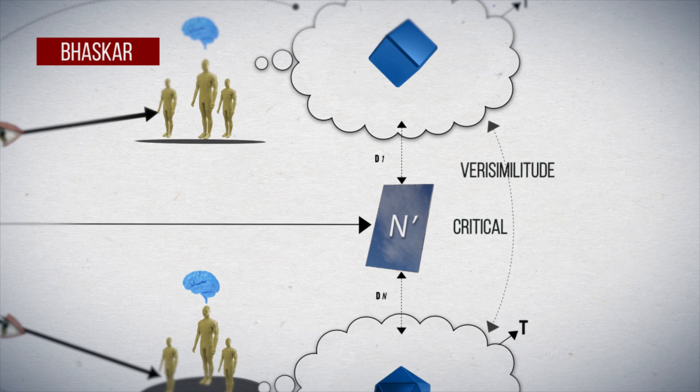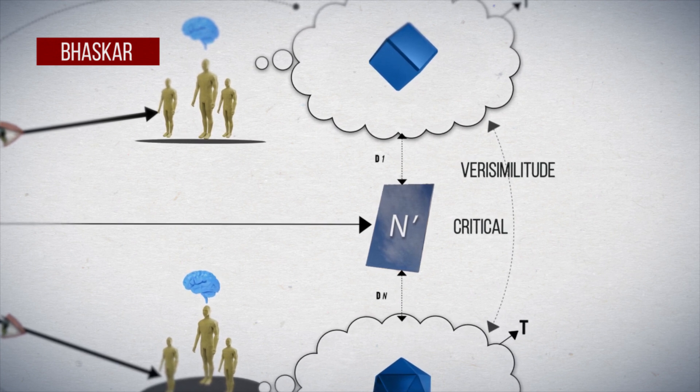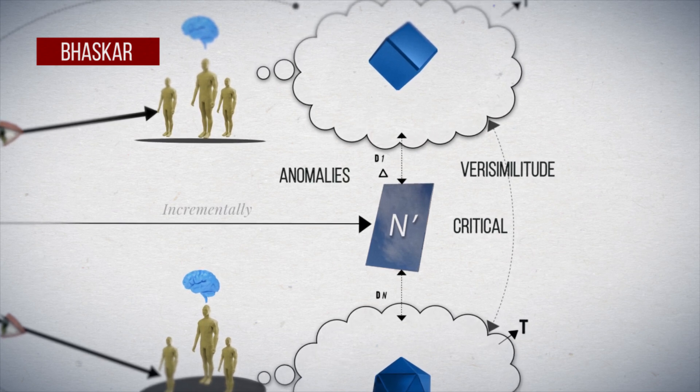For Baskar, communities seek to attain verisimilitude between their constructs and what is known of reality, incrementally overcoming the anomalies over time.